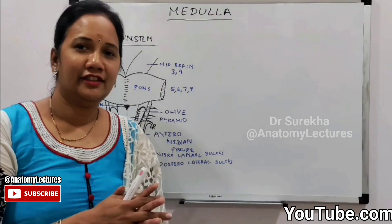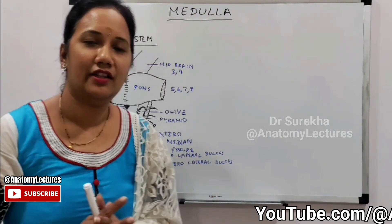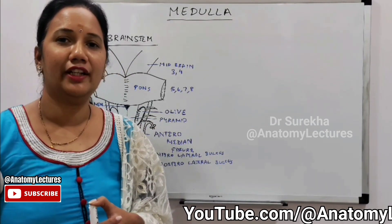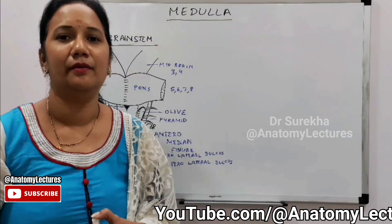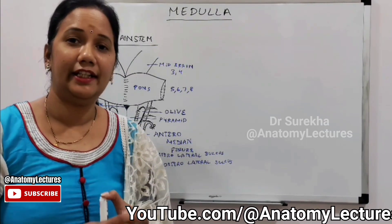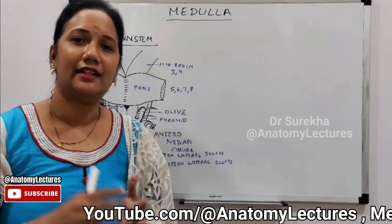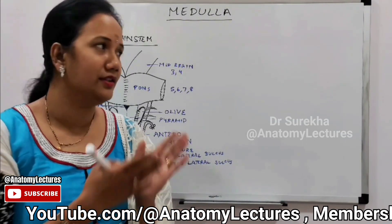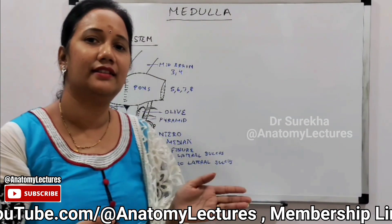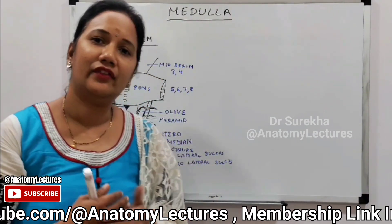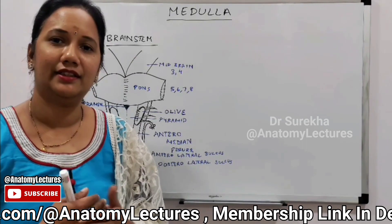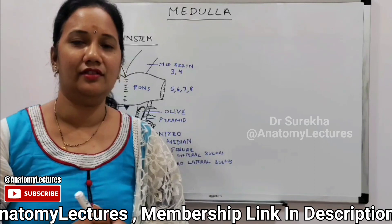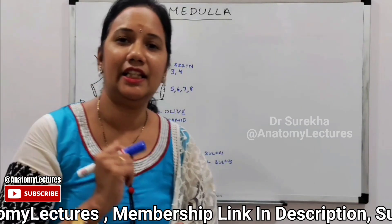Now that we have completed the external features and seen all the cranial nerves related to the medulla, we will look at the internal structure of the medulla. To study the internal structure, we will take cut sections at three different levels, because the medulla is not the same throughout — it has a closed part, an open part, and different nuclei are present at different levels.